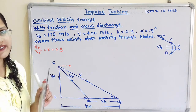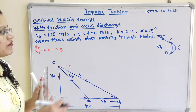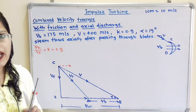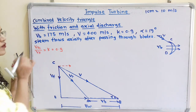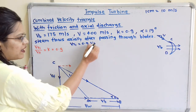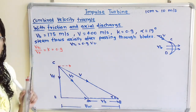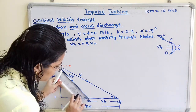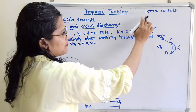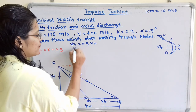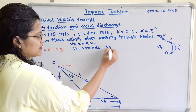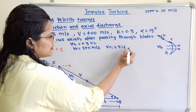We now move to draw the velocity triangle at the exit tip. The friction factor K equals 0.9, which is the ratio of Vr1 to Vr. From the diagram, we measure the distance A to C as 24 cm, which corresponds to 240 m/s. Therefore Vr equals 240 m/s, and Vr1 equals 0.9 times 240, which equals 216 m/s.